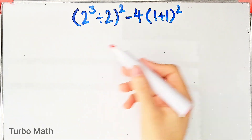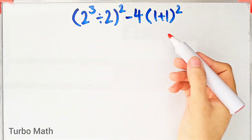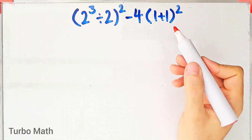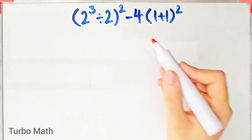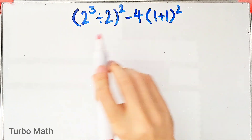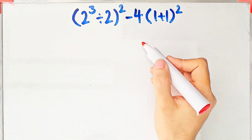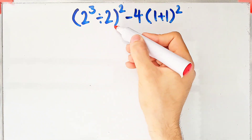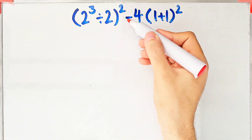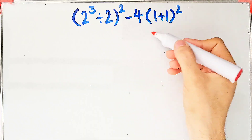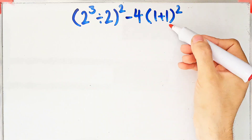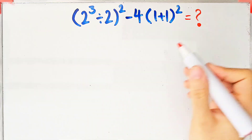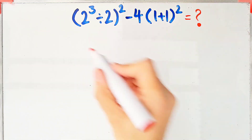Hi friends, welcome to Turbo Mast channel. A lot of people when they see this question don't know which operation to do first. The question is: two to the power of three, divided by two, then all of them to the power of two, minus four, then times one plus one, then all of them to the power of two. What is the answer?